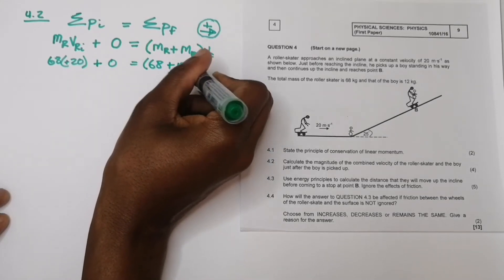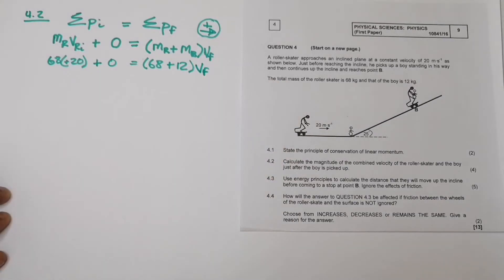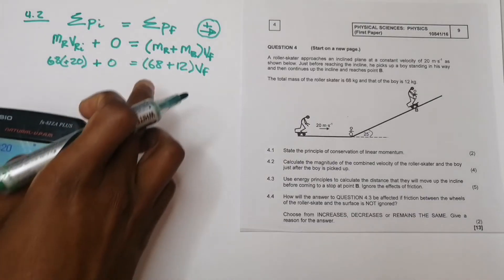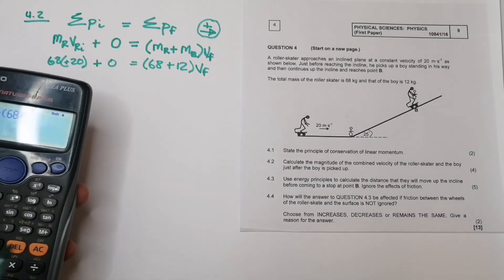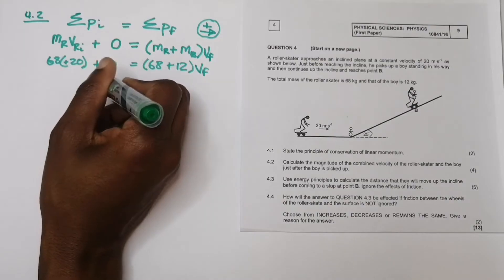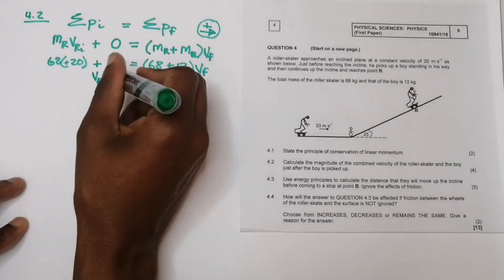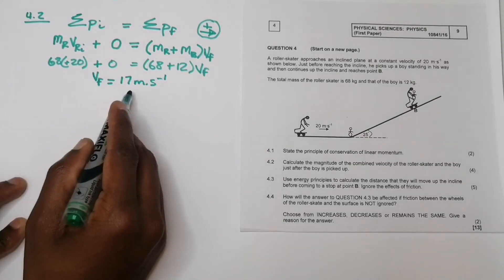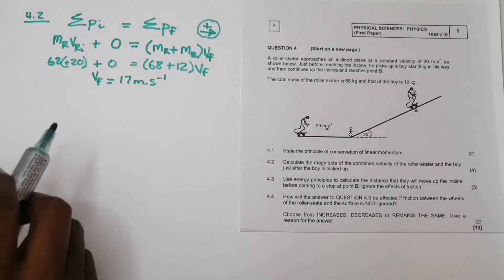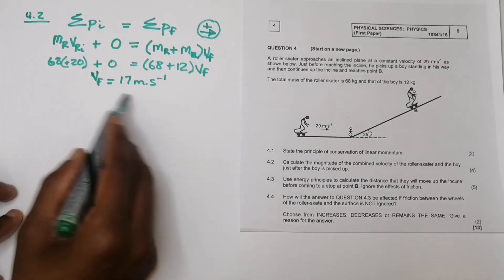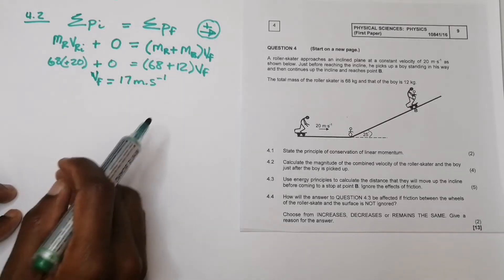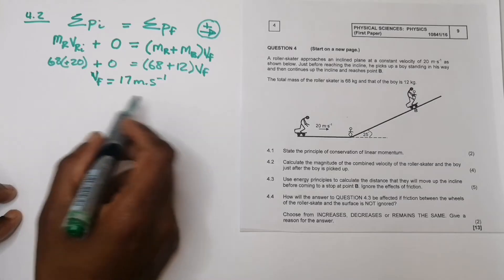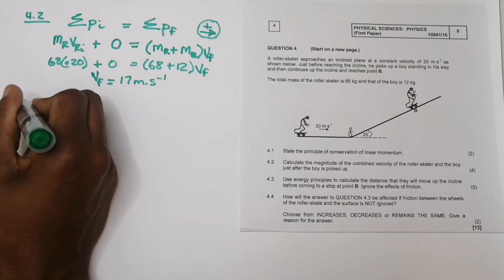Calculating: 68 multiplied by 20, divided by (68 + 12), gives a final velocity of 17 meters per second. This makes sense — after the roller skater picks up the boy, the velocity decreases because the boy was stationary and the combined mass is now larger. They asked for the magnitude only, so we don't state a direction, but note that velocity is a vector, so if direction were required you would need to include it.